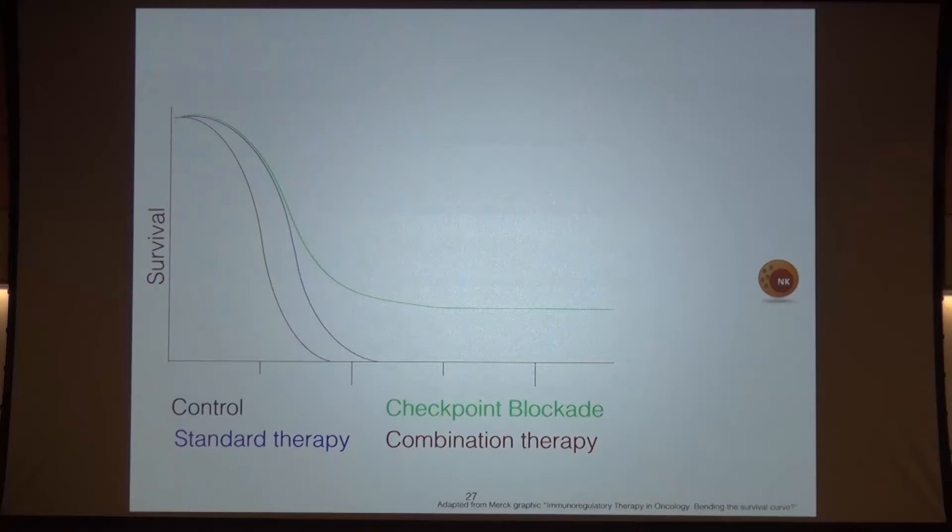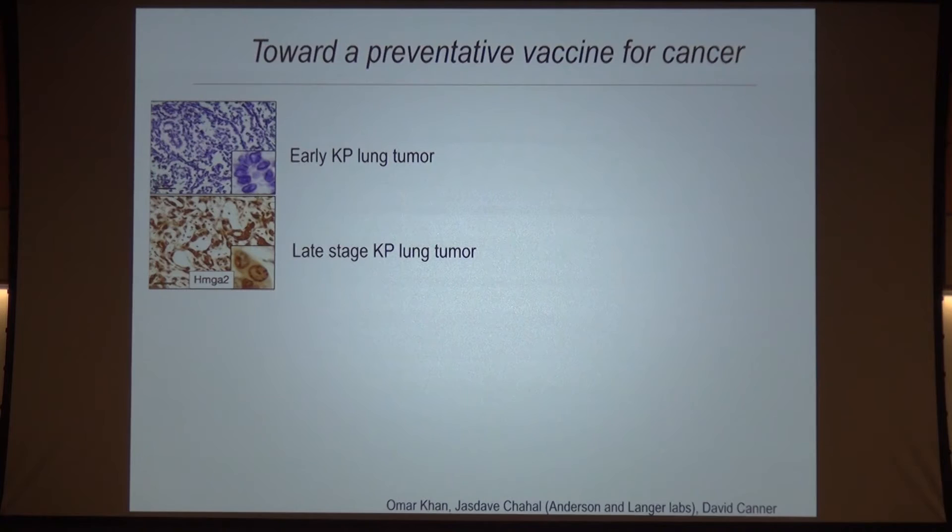Returning to the so-called tail of the curve observed with T cell-based therapies, the field is very keen to learn whether new therapies added to existing ones will boost these responses. We think that NK cell-based therapies might be one such approach to lead to more impressive responses.